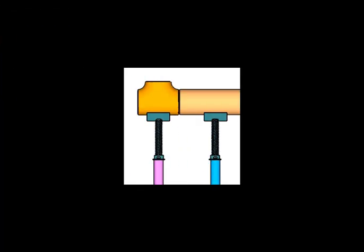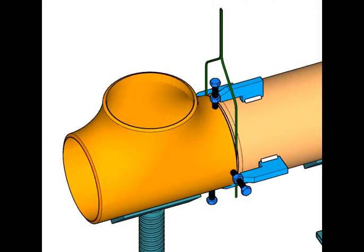Put the T on the support as shown in the view. Put a gap rod between the T and the pipe. Make sure the diameter of the gap rod is suitable for root gap of the joint.